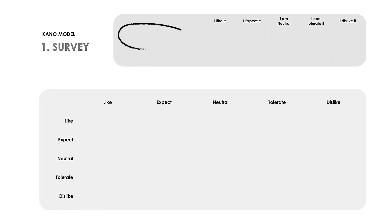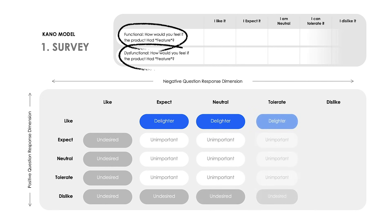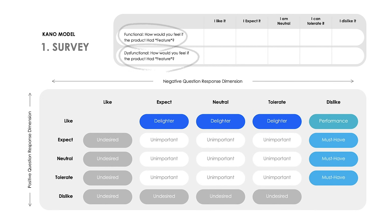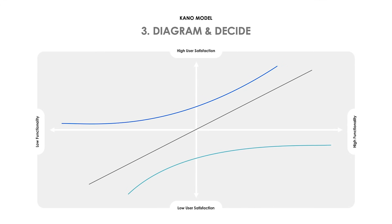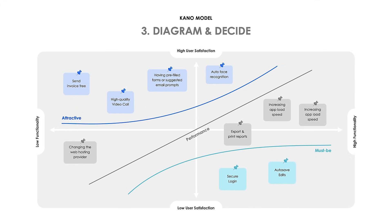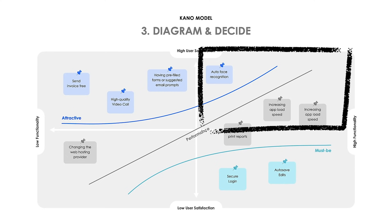To decide what product features to focus on for your next product launch, you can use a Kano diagram. Survey potential users with key questions to draw out insights on potential features. Ask respondents to answer whether they would like, expect, tolerate, dislike, or be neutral on a specific feature. Create a table of responses with the number of answers for each, then collate these responses into a table that you can plot on the Kano diagram. The features with high functionality and high user satisfaction should be your main feature to focus on.